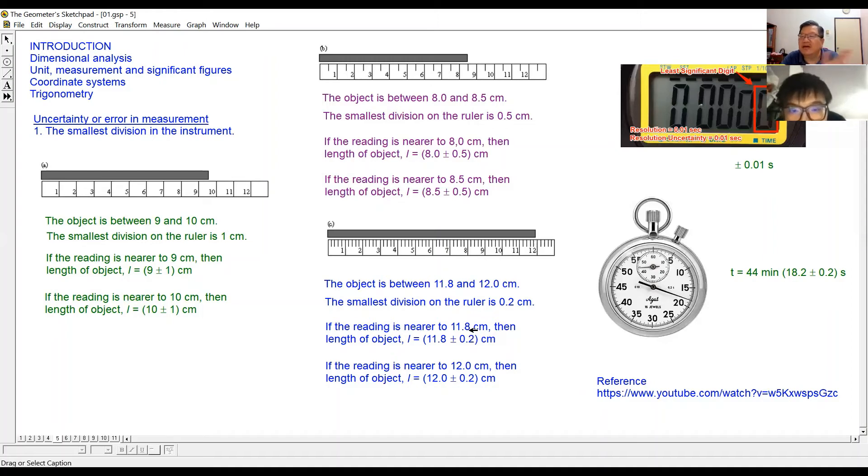Okay, so you cannot see here. You just take the nearest. Don't try to read in between. In physics, you just take the nearest one. Don't try to read in between. Either you take 8 or 9, you take 12 or 11 like that. So what is the reading you tell me of this black object? 11.8 plus or minus 0.2.